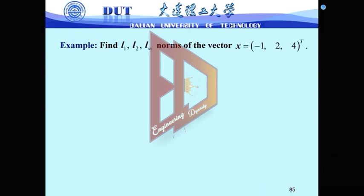This is an example to help you understand the norms. Now, we need to find L1 norm, L2 norm, and L infinity norm, the three norms for the vector x. It is a three-dimensional vector with three components: minus 1, 2, and 4. Here, t means transpose, that means x is a column vector. Now let's practice.